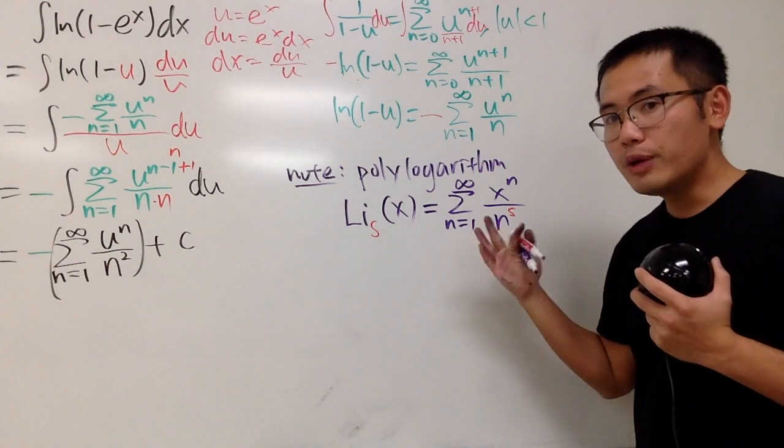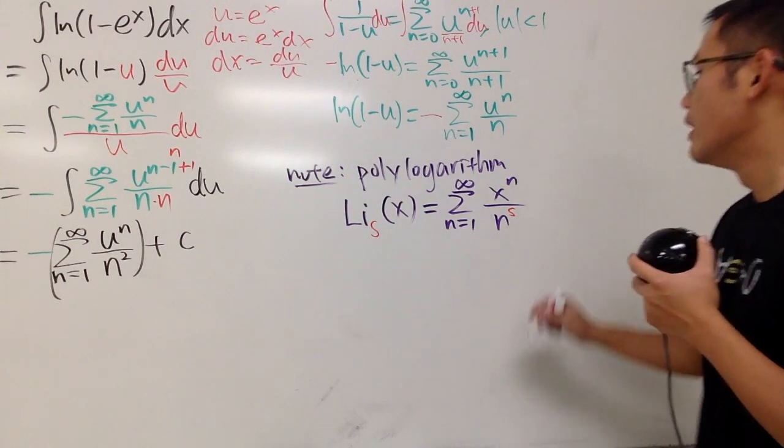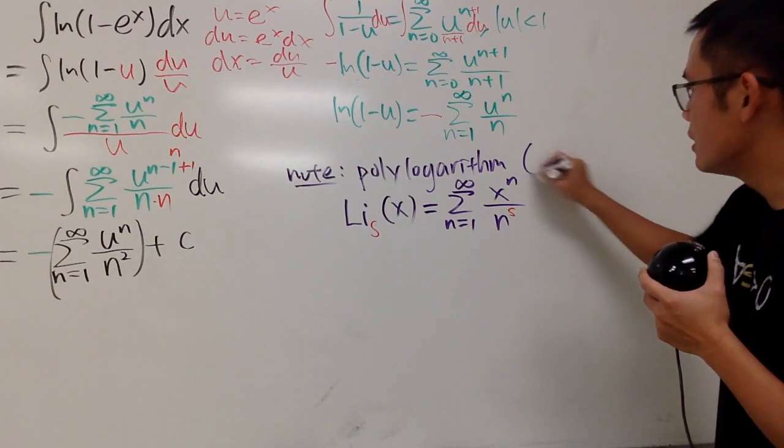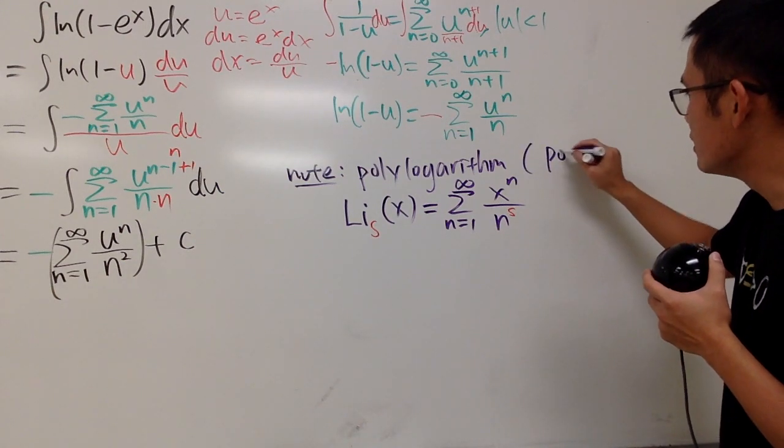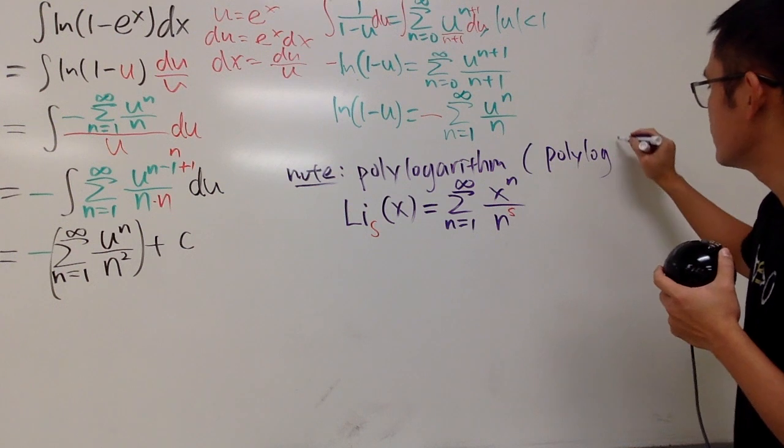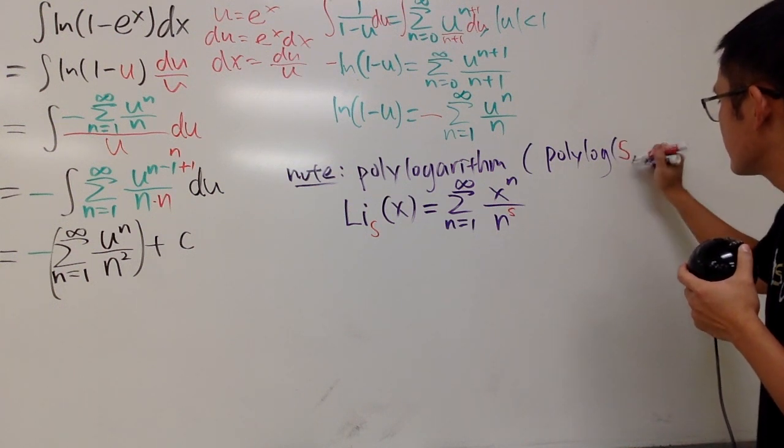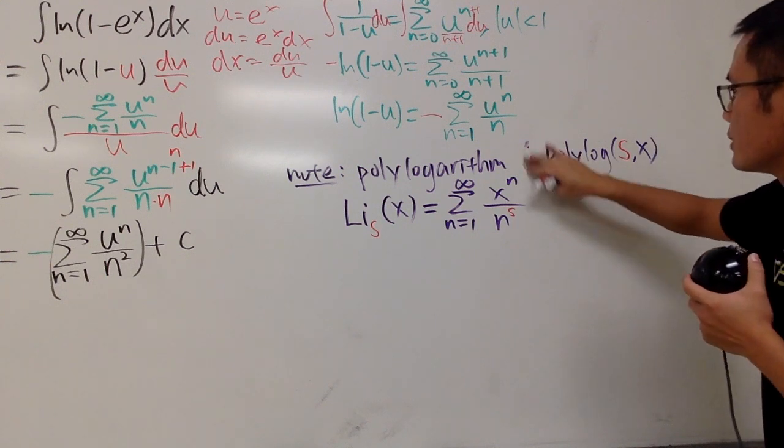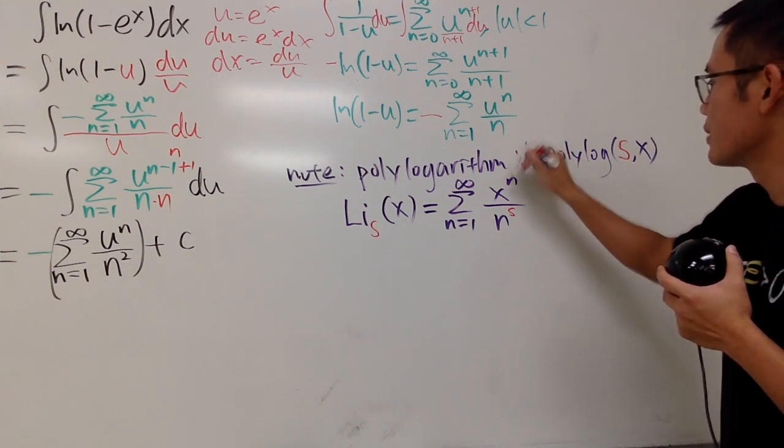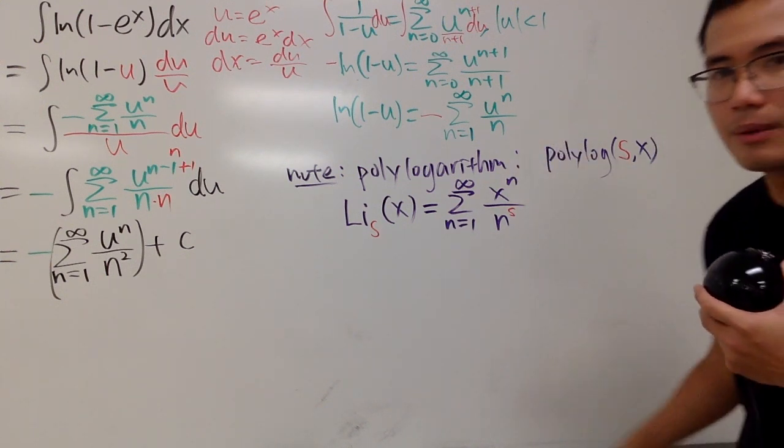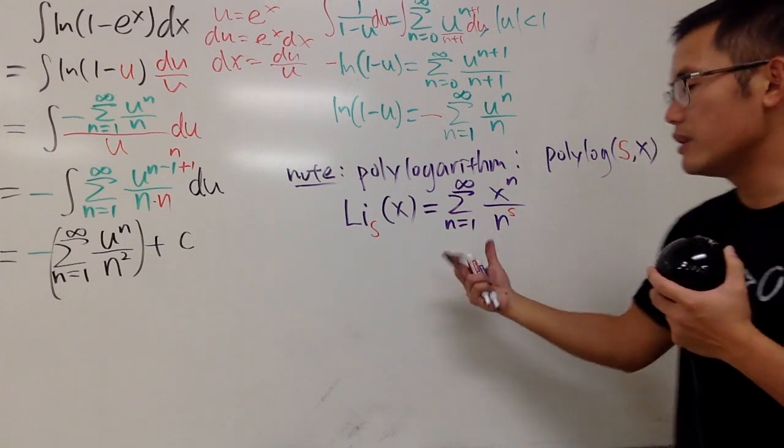And this right here, if you want to enter this on Wolfram Alpha, the command is going to be polylog, like this, with the parentheses, and the s, comma, x, like this. So, I'll just put it down like this so that you don't get confused with the parentheses. So, that's the command if you want to enter this on Wolfram Alpha.